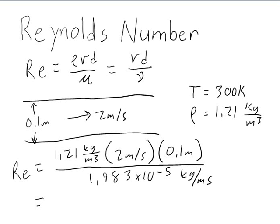And so we can work this out, and it's equal to 12,203. And so this is a unitless parameter, right? Our units all cancel out.